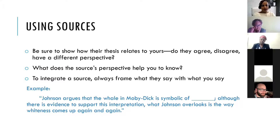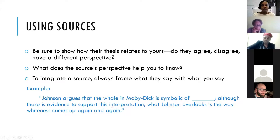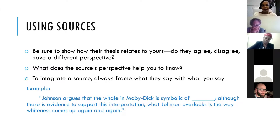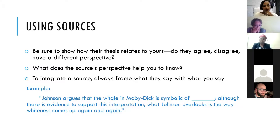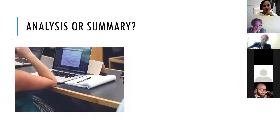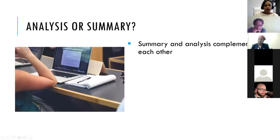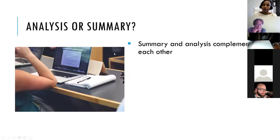To integrate a source, you always want to frame it — don't just drop a quote in and move on. You should be telling us: 'Johnson argues that the whale in Moby Dick is symbolic of whatever it is symbolic of. Although there is evidence to support this interpretation, what Johnson overlooks is the way whiteness comes up again and again.' So if Johnson is saying something about the symbolism, the question for you as a writer is how does that compare to the argument you're making — do you agree, do you disagree, is he saying something different? You always want to frame whatever you bring in from somewhere else, because at the end of the day it's your argument and your analysis. We need to understand the difference between summary and analysis.